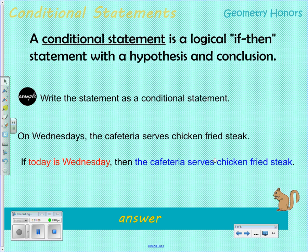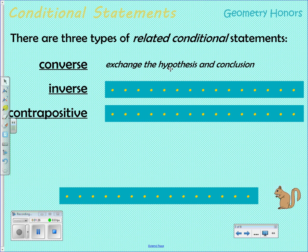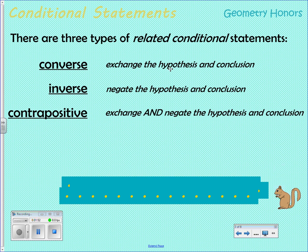There are three related conditional statements: the converse, inverse, and contrapositive. The converse takes the original if-then statement and exchanges the hypothesis and conclusion. The inverse takes the original conditional statement and negates both the hypothesis and the conclusion — negation means it has the opposite meaning. The contrapositive exchanges and negates both the hypothesis and the conclusion.